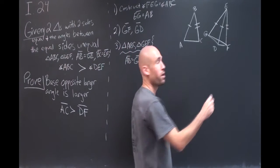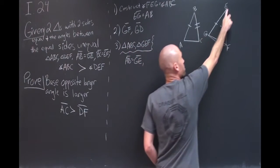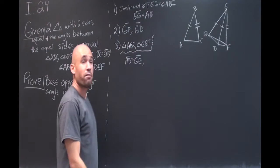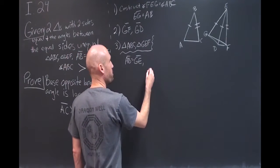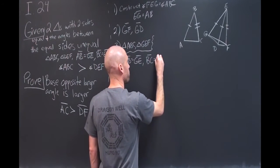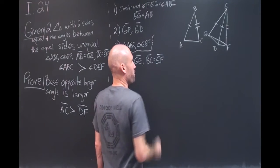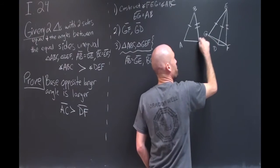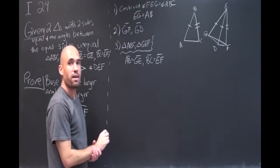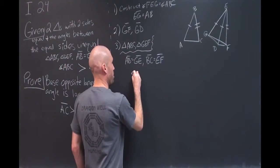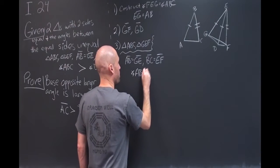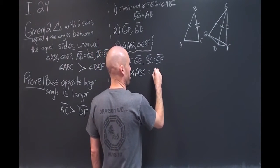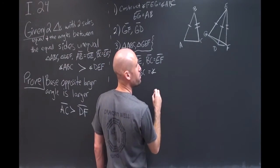We also know that BC is equal to EF. That was part of our original given. Further we constructed angle FEG equal to angle ABC. So we know angle ABC is equal to angle GEF.